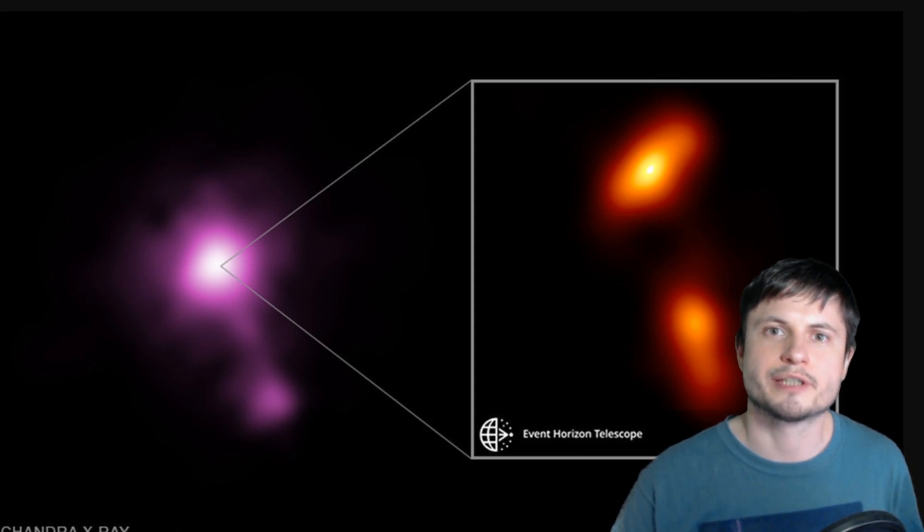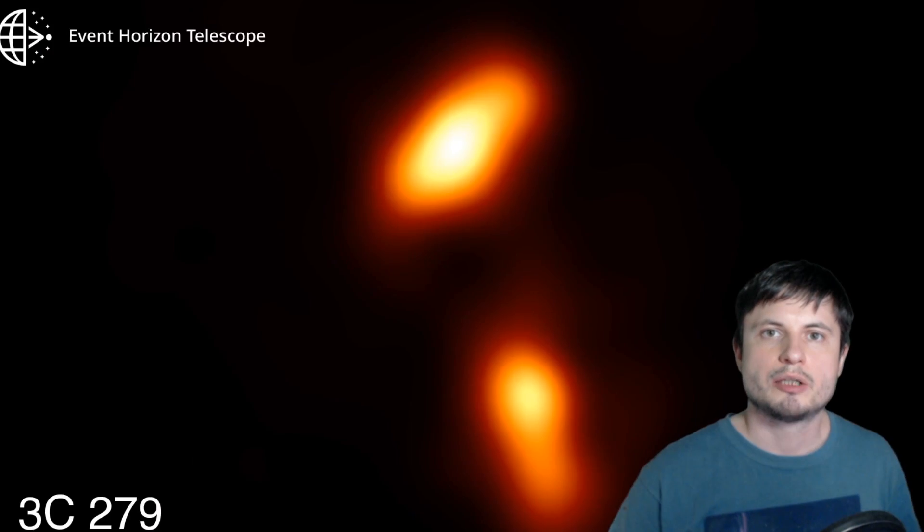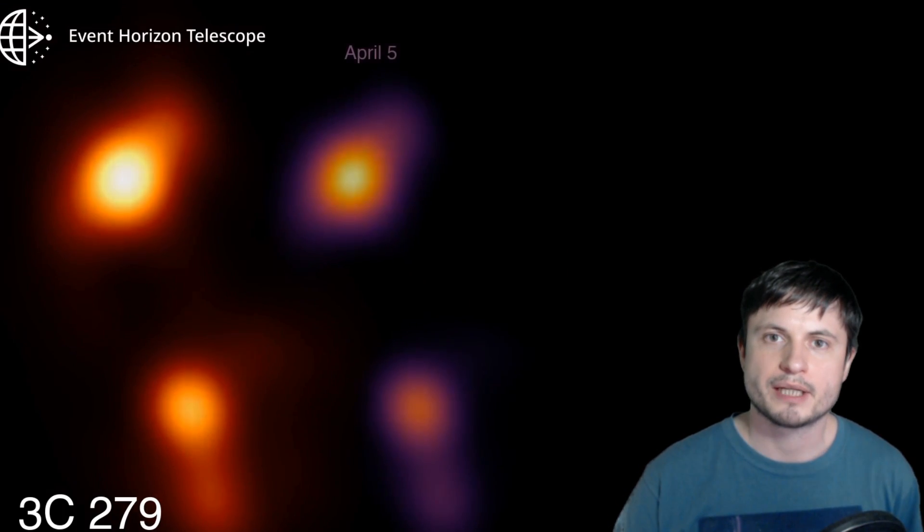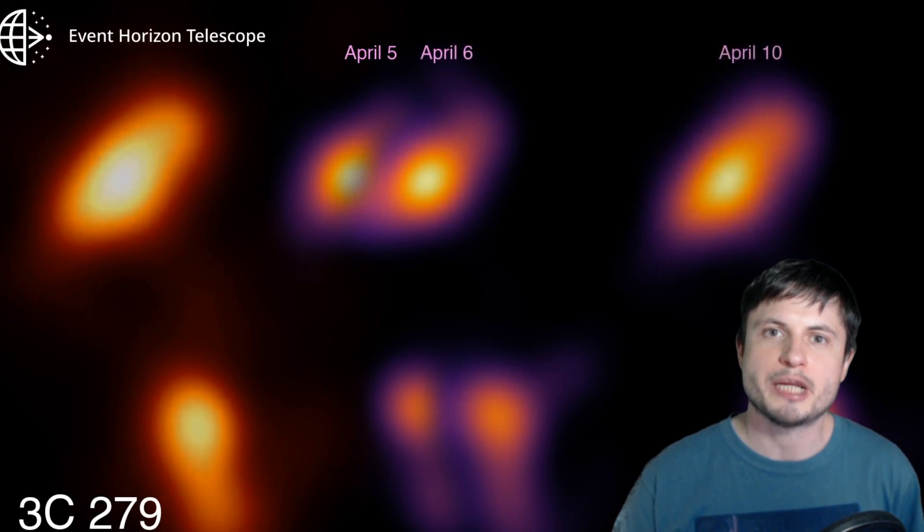So this was just used as a calibration, nothing else. But even in the short time we got to observe this blazar, we were able to discover something really unusual about the jet itself. Now, not the fact that it's actually moving so fast, or appears to move so fast, it was actually the shape itself.